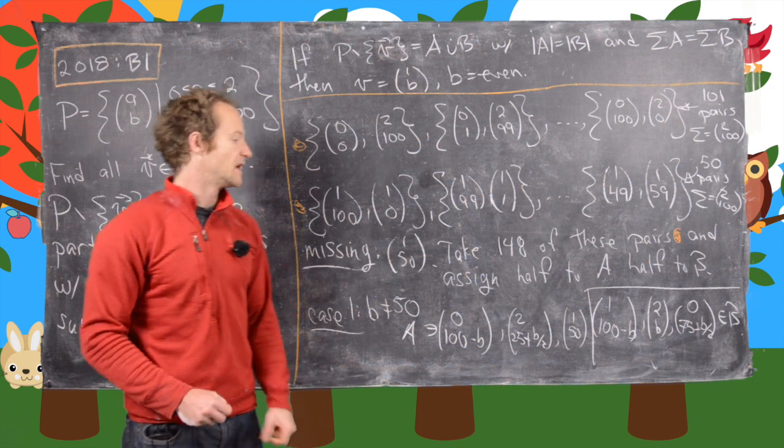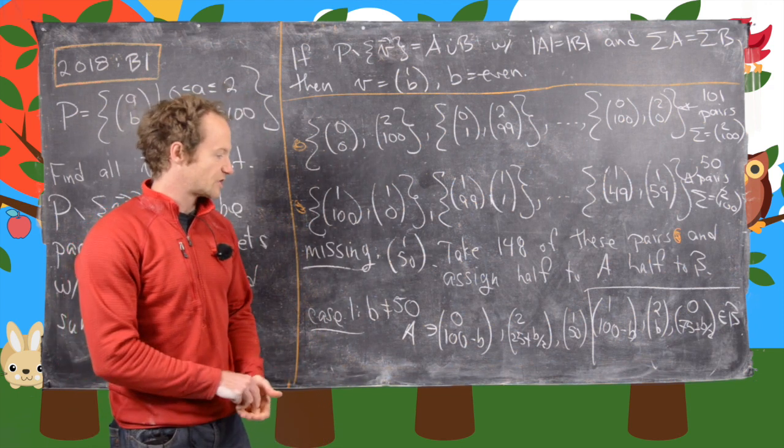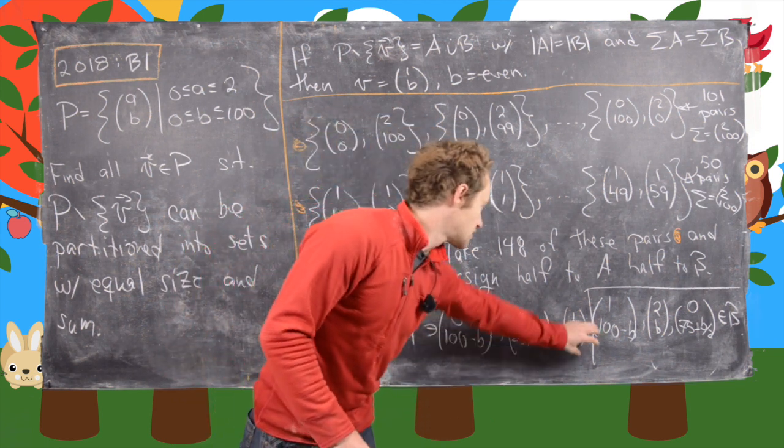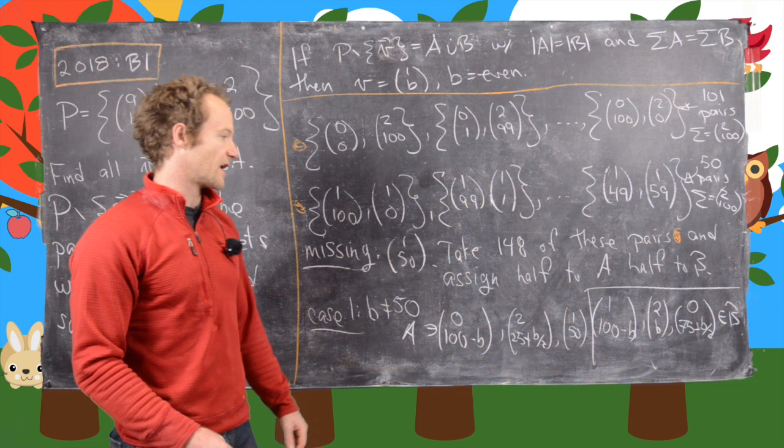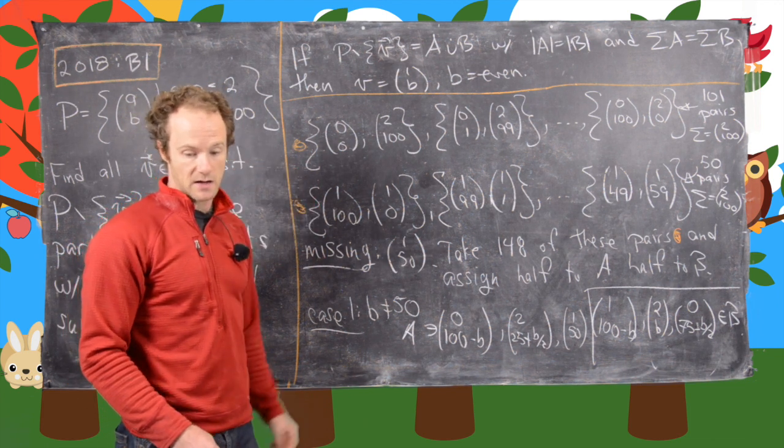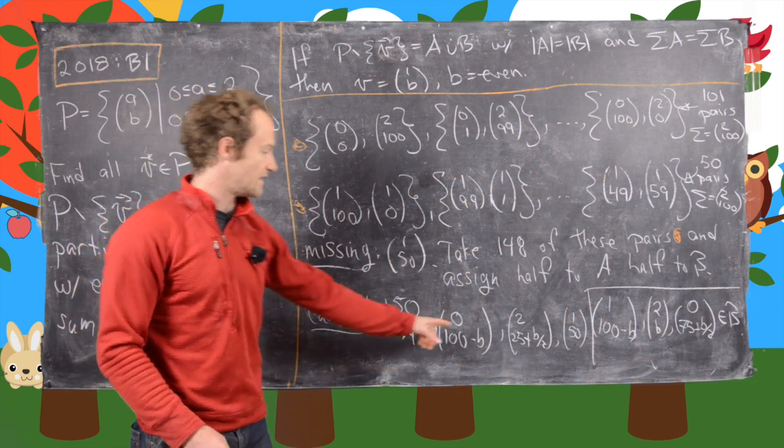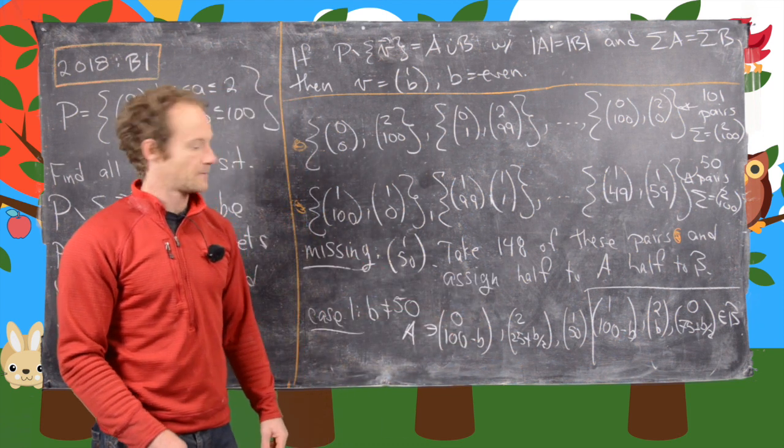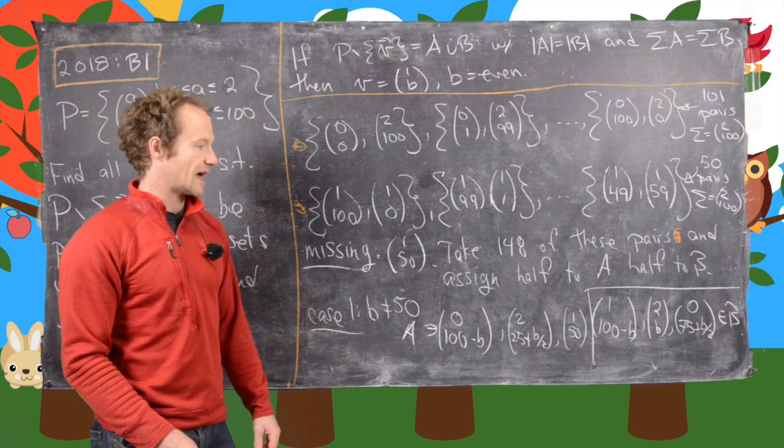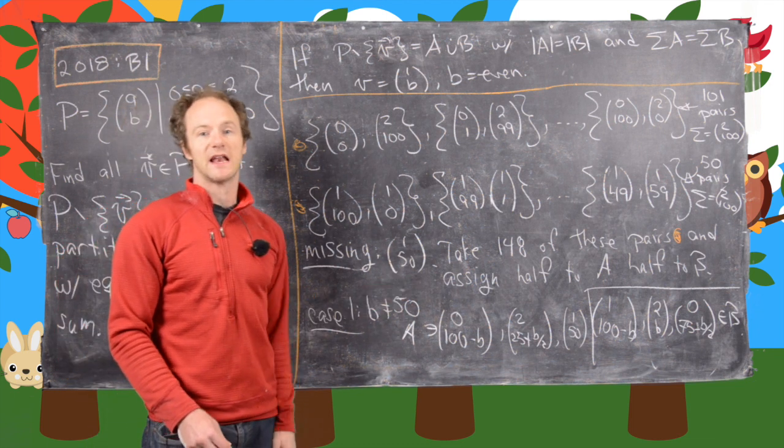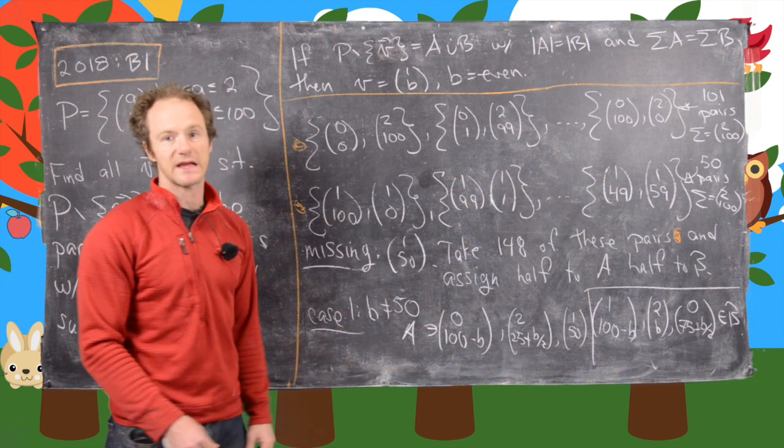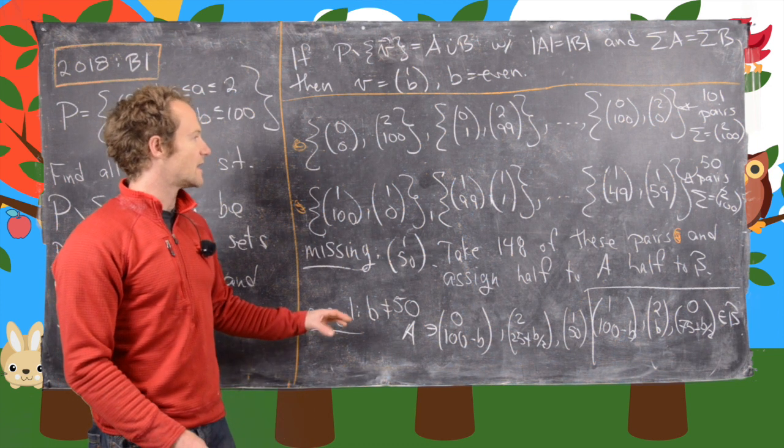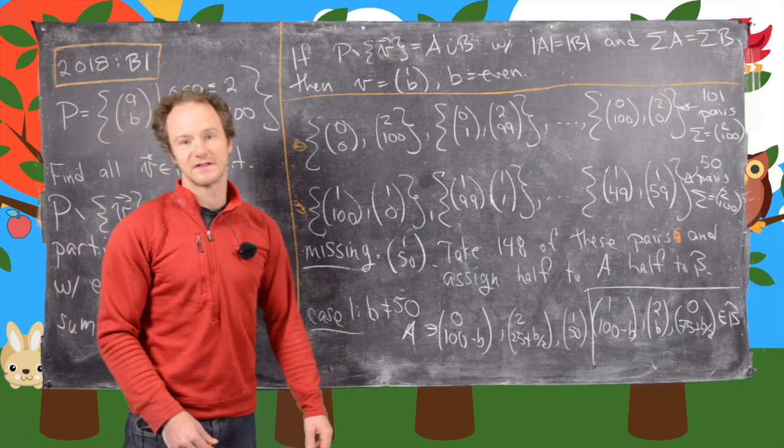And now we know that A and B at this point have the same sum because each of these pairs have the same sum. Then we took three left over pairs which are given by these elements not including (1,50). We assign these three elements to A, those three elements to B, but each of those three elements has the same sum. So that means in the end A and B have the same sum. That's if B is not equal to 50.